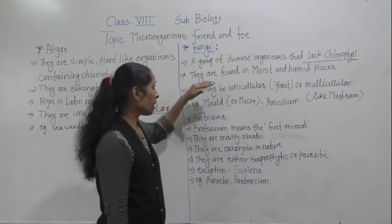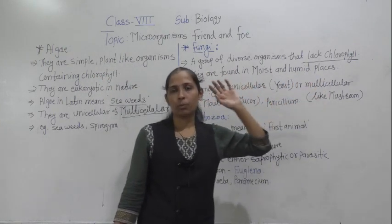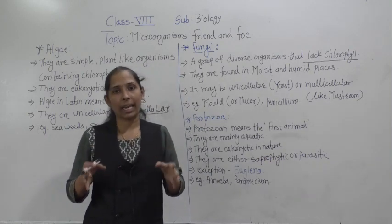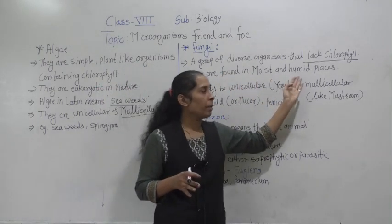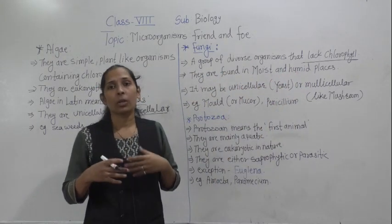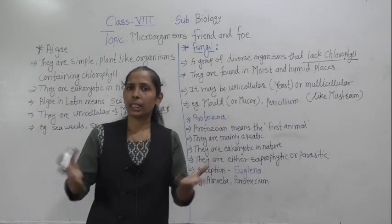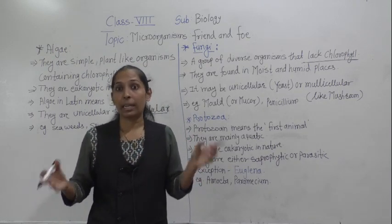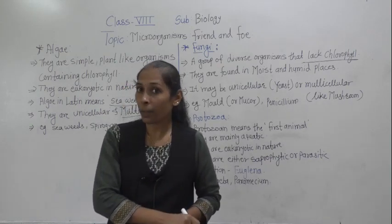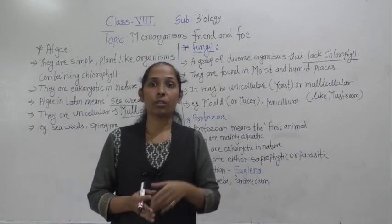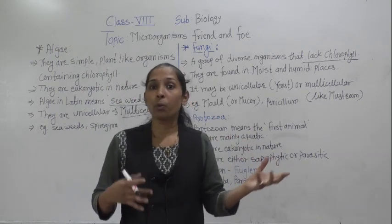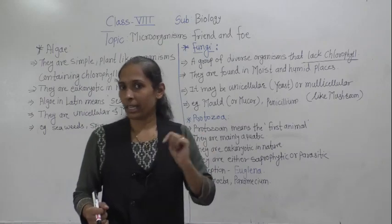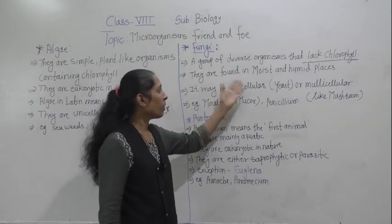Fungi are found in moist and humid places. Mostly fungi can grow in warm, humid, and dark areas. The spores of fungi are already present in the air, and whenever they get favorable conditions they start to grow on any surface. Most fungi grow during the rainy season because that season provides hot and humid climatic conditions favorable for fungal spore growth.